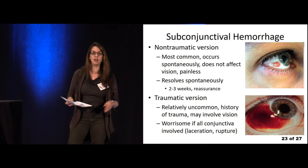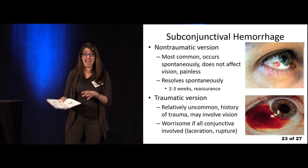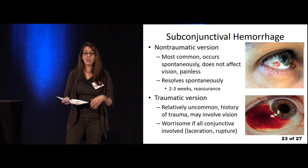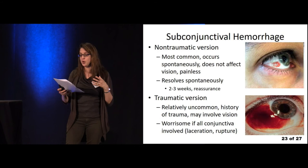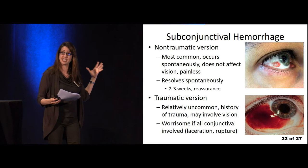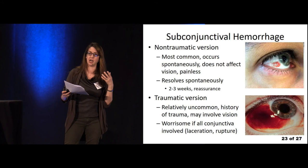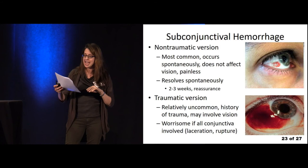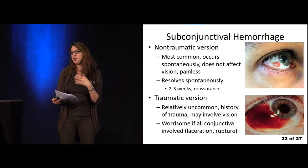Subconjunctival hemorrhage — we see it all the time. The majority of cases are idiopathic; you can get them from Valsalva or coughing. Patients often ask if it's because of high blood pressure — systemic hypertension does cause microvascular changes in conjunctival vessels predisposing to this. If patients have recurrent or persistent subconjunctival hemorrhage, work them up for systemic hypertension, bleeding disorders, or ocular malignancy.